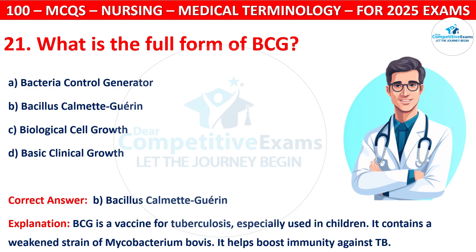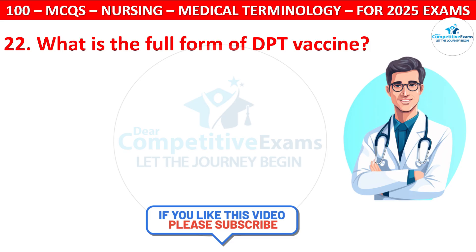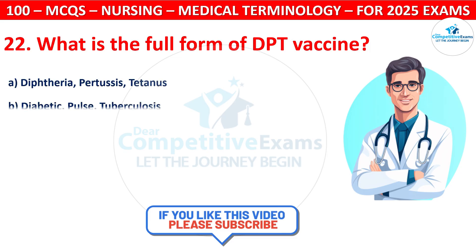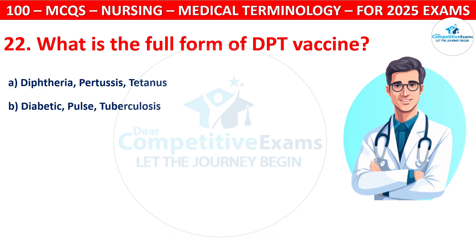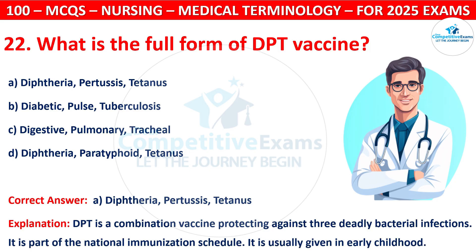Question 22: What is the full form of the DPT vaccine? Options are: Diphtheria, Pertussis, Tetanus; Diabetic Pulse Tuberculosis; Digestive Pulmonary Trachea; or Diphtheria, Paratyphoid, Tetanus. The correct answer is A, that is Diphtheria, Pertussis, Tetanus. DPT is a combination vaccine protecting against three deadly bacterial infections. It is part of the national immunization schedule and is usually given in early childhood.